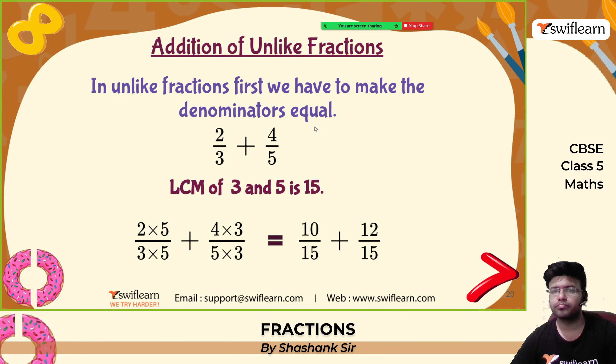Subtraction of like fractions works the same way — if the denominators are the same, simply subtract the numerators. For example: 7 by 9 minus 2 by 9. The common denominator is 9. 7 minus 2 gives 5, so the answer is 5 by 9. Another example: 5 by 6 minus 2 by 6. 5 minus 2 is 3, giving 3 by 6, which simplifies to 1 by 2.